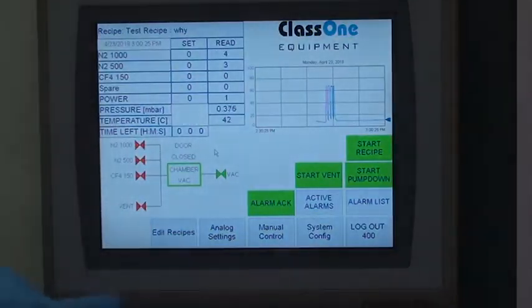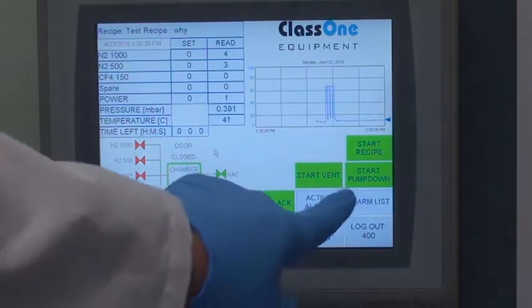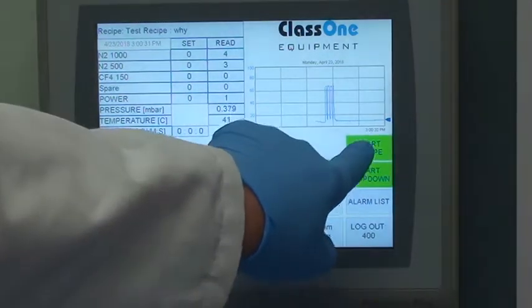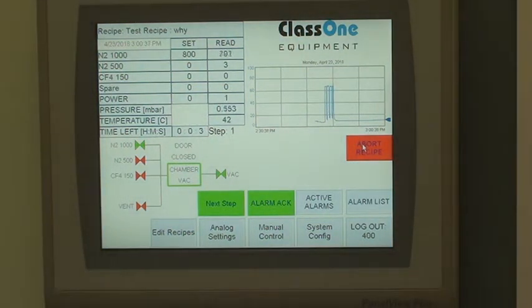I will log in and start running a recipe. I have a test recipe set up. We just start recipe. It sets the gas number one set point, gives it a stabilization. And I do not have power set on step one. You'll see we're in step one of the recipe.